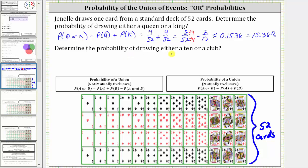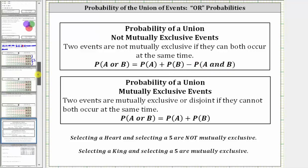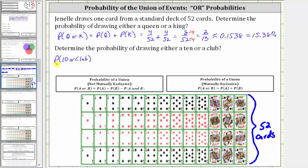Now let's determine the probability of drawing either a ten or a club. Because a card can be both a club and a ten at the same time, the events of drawing a ten and drawing a club are not mutually exclusive. Two events are not mutually exclusive if they can both occur at the same time, and in that case the probability of A or B equals the probability of A plus the probability of B minus the probability of A and B. So the probability of a ten or a club equals the probability of a ten plus the probability of a club minus the probability of a ten and a club.